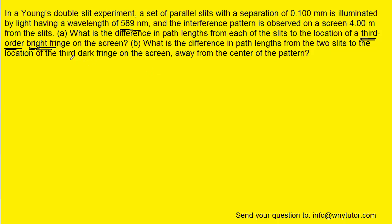For part B, we're being asked to locate the third dark fringe. Now because it says dark, that actually corresponds to destructive interference. And for destructive interference, the path length is equal to m plus 1 half multiplied by the wavelength.